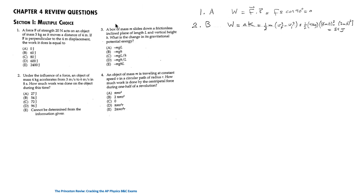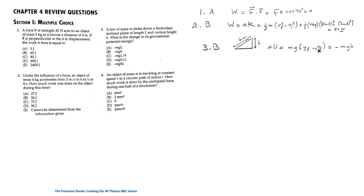For question 3, a box of mass M slides down a frictionless inclined plane of length L and vertical height H. The change in gravitational potential energy is MG(Y_final − Y_initial), and since the box falls through vertical distance H, the change is −MgH. This means gravitational potential energy decreases by MgH, and the length of the ramp is irrelevant here.